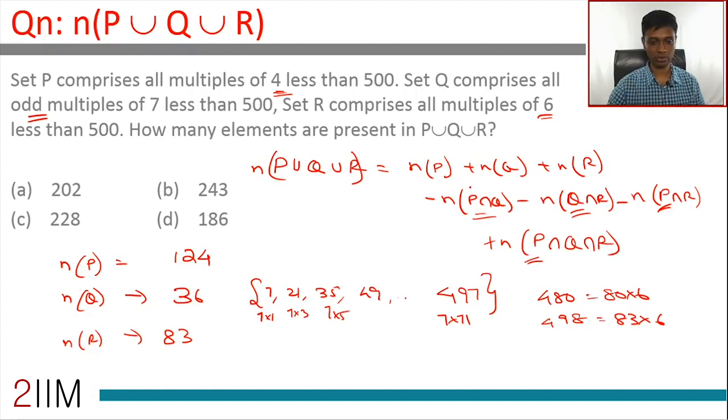Q∩R: all odd multiples of 7, all multiples of 6. Odd numbers, even numbers - there's nothing. If P∩Q is a null set, then P∩Q∩R is nothing.